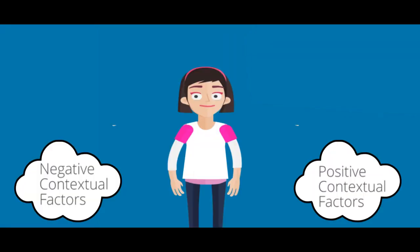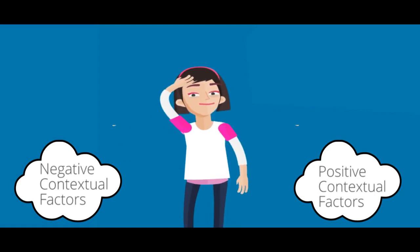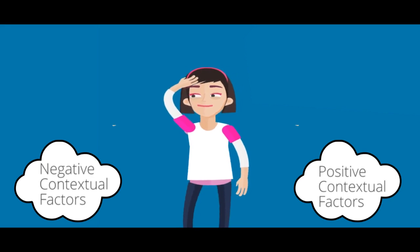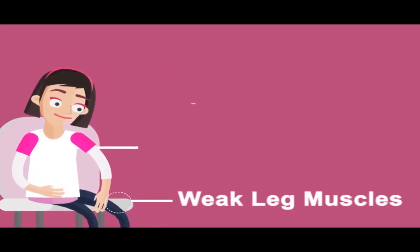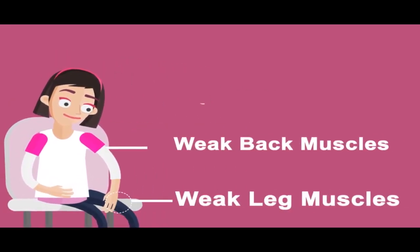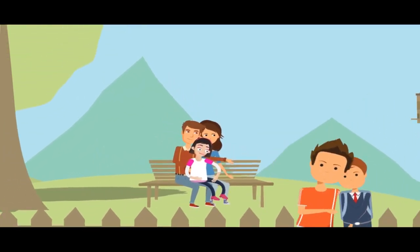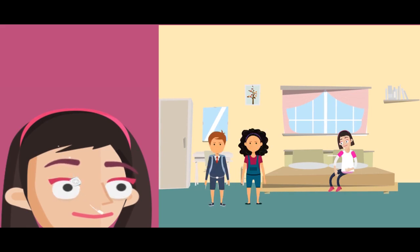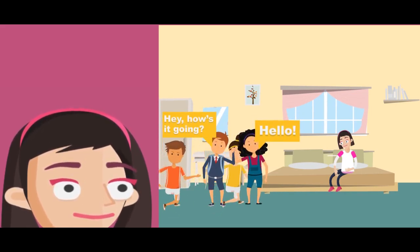To understand this more, let us meet Sarah and see how supportive and challenging contextual factors can influence Sarah's overall development and her desire to go to school. Sarah has weak leg and back muscles, which makes it difficult for her to walk independently. Impairment to Sarah's brain has also affected her speech, making talking to family and friends difficult.